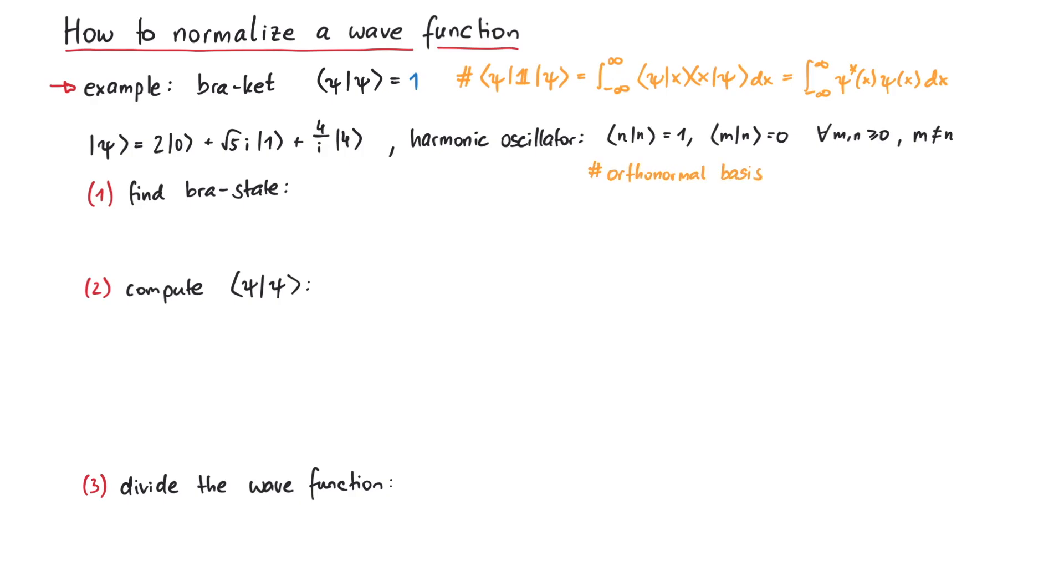In order to normalize this state, just follow these three steps. First, find the bra-state of psi. Second, calculate the bra-ket product of psi with itself. Let's say the result is A. Third, write down the normalized wave function psi tilde as 1 over the square root of A times psi. Try to do this yourself, and if you're ready, here is the solution.